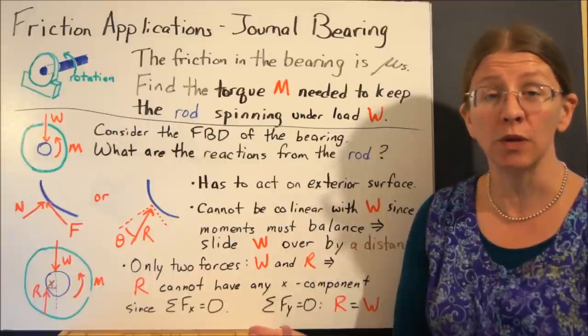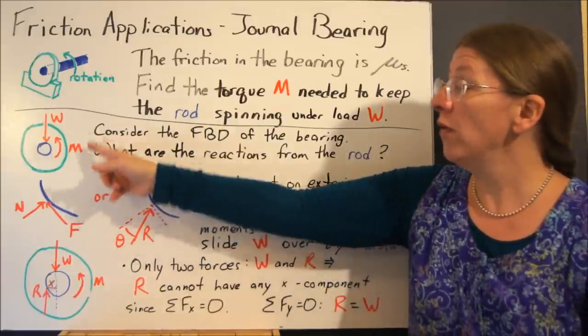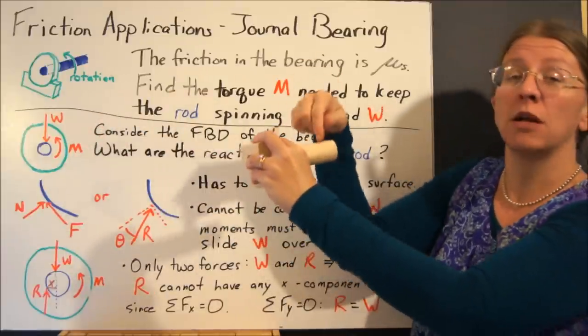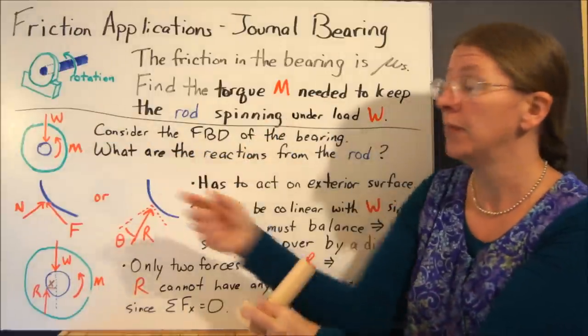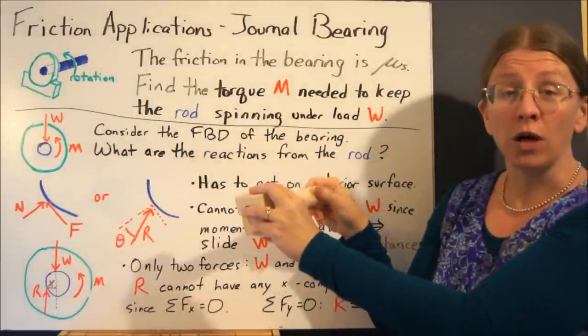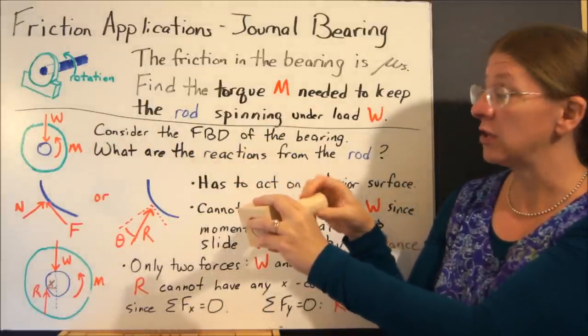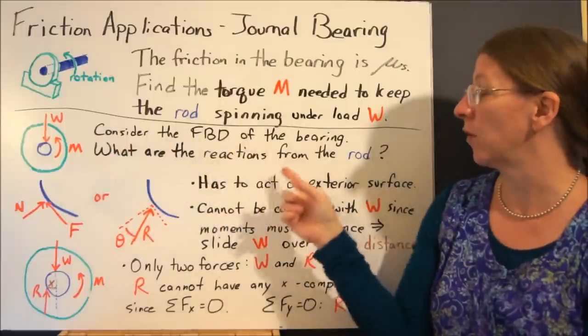What do the equations of equilibrium look like? So we know that we're going to have whatever load is pressing on this rod, so that'll be W. We know that we're going to need that torque, whatever that M is, that's actually keeping it spinning. That's what we're looking for.